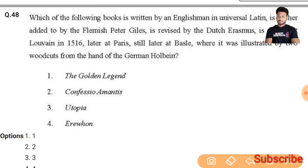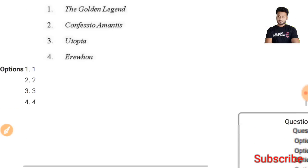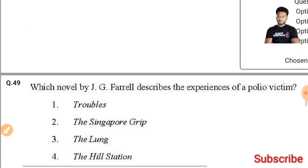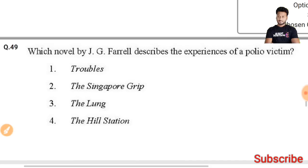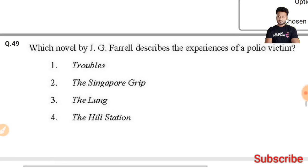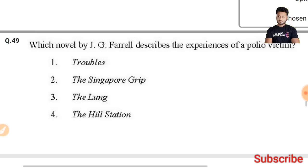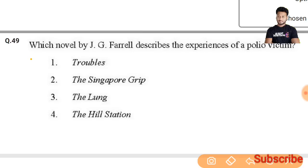Question 49: Which novel by J.G. Farrell describes the experience of a cholera victim? The right answer is 'Troubles' — the first option is the right answer.